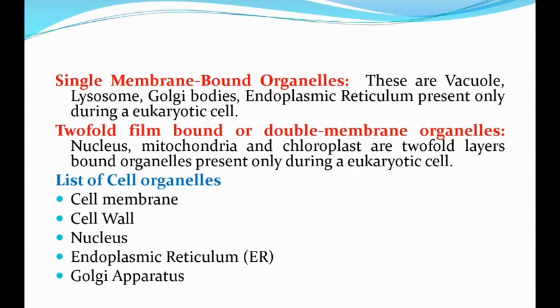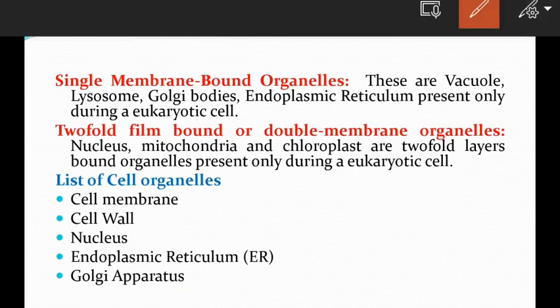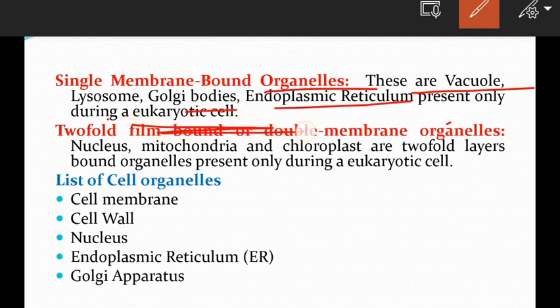Coming to single membrane-bound organelles — these are vacuoles, lysosomes, Golgi bodies, and endoplasmic reticulum, which are present only in eukaryotic cells.